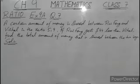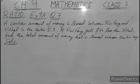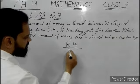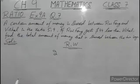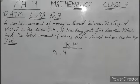Assalamu alaikum students. Again we will discuss problems related with ratios. We have question number 7. Before I start question number 7, I want to tell you how we can form an original ratio from the simplified form of a ratio. We can simplify a ratio by dividing — for example, dividing by 2.